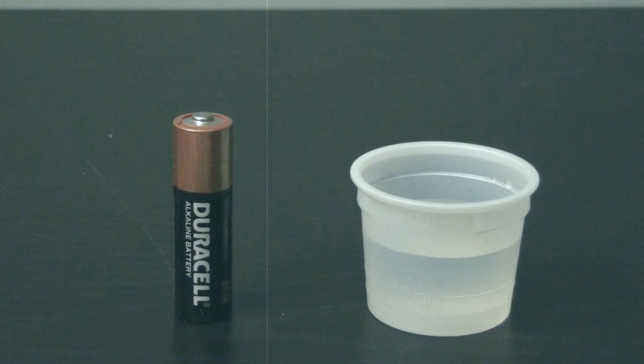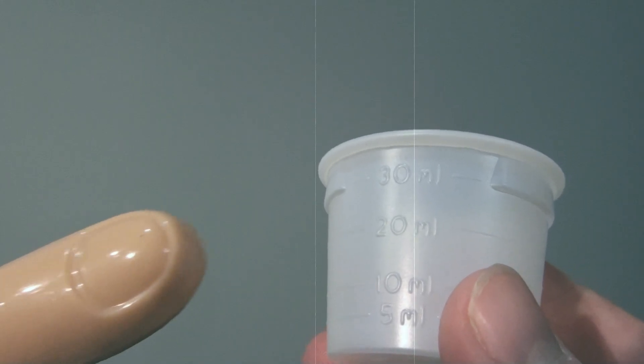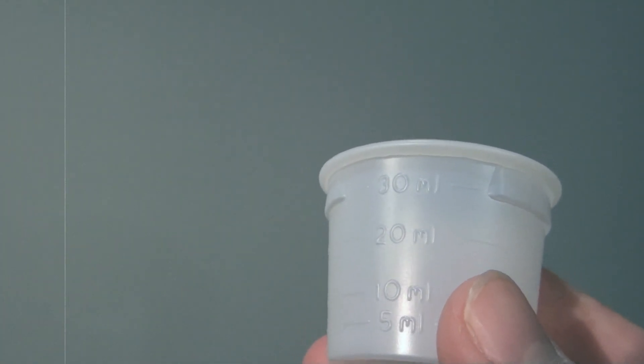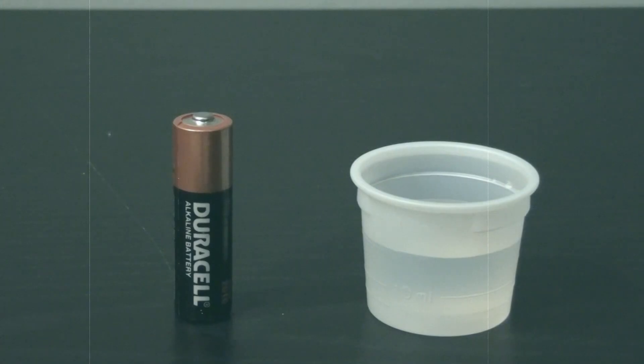Here we have a battery and a small cup of water. Make sure that the water is full to 20 milliliters. Dab your cotton swab into the water. Make sure it's good and wet.